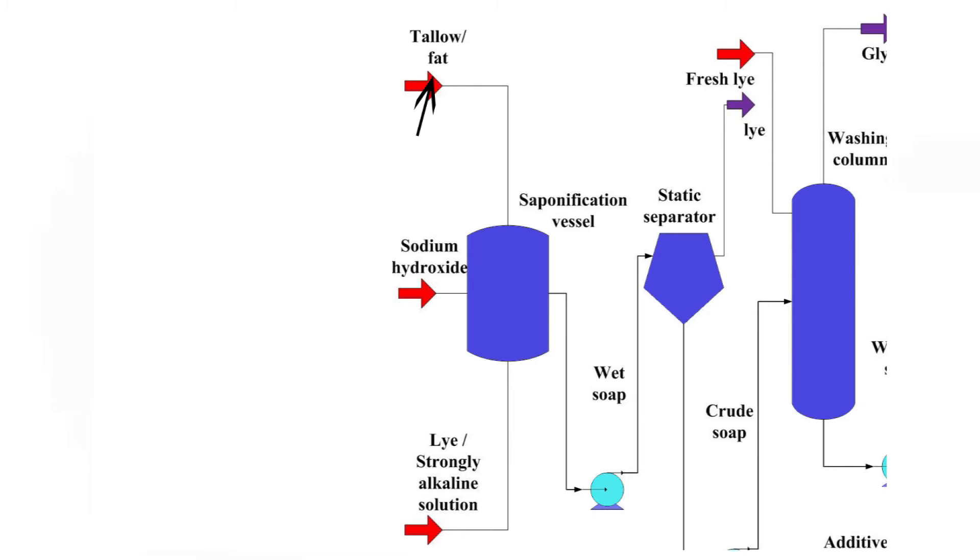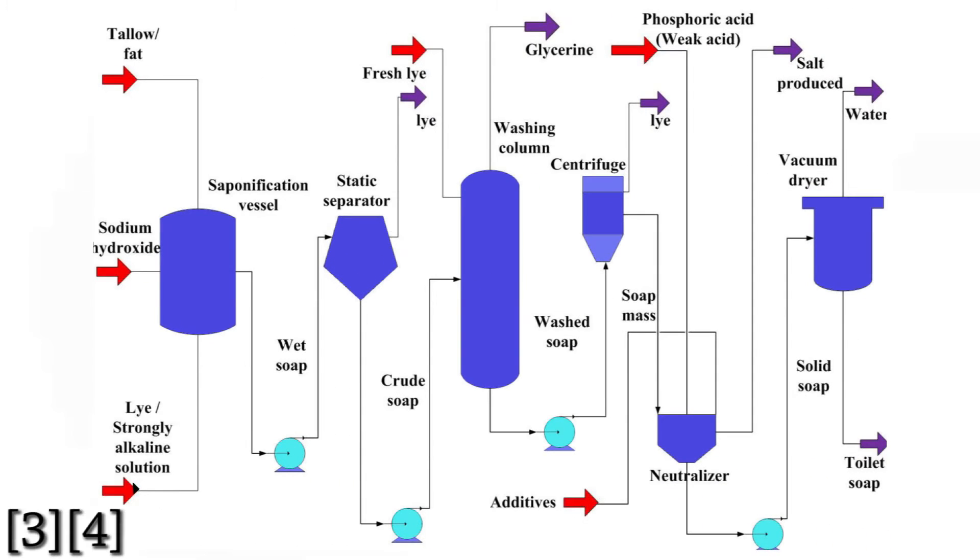Tallow will combine with other oils, for example, coconut oil, palm, and palm kernel oil to be main raw material. The tallow, lye-strongly alkaline solution, and sodium hydroxide are fed into the saponification reactor.